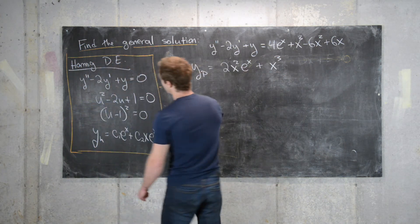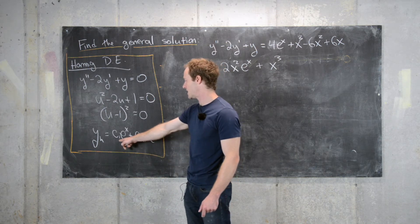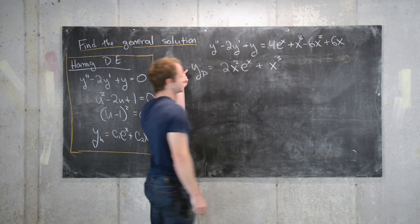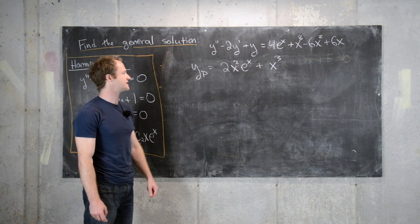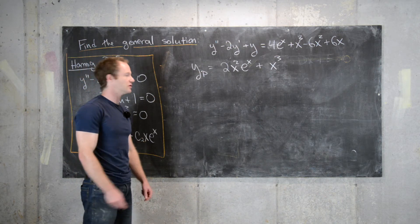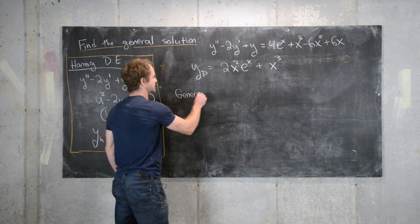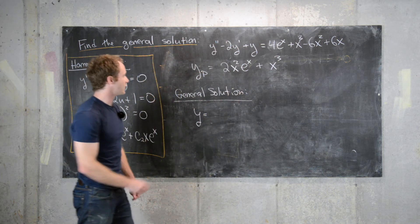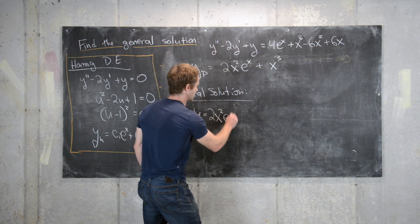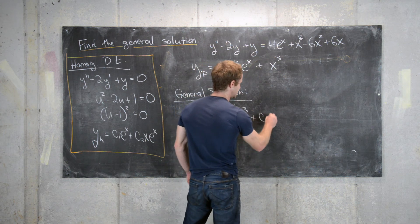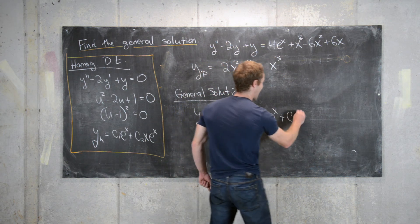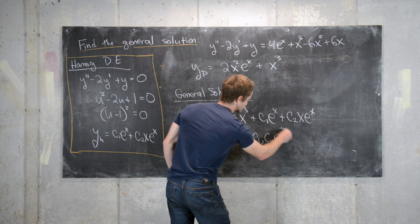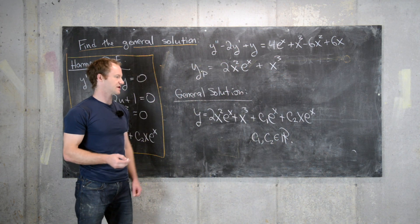The homogeneous solution is y_h = c1·e^x + c2·x·e^x, and the particular solution is y_p = 2x²·e^x + x³. Therefore the general solution is: y = 2x²·e^x + x³ + c1·e^x + c2·x·e^x, where c1 and c2 are arbitrary constants.